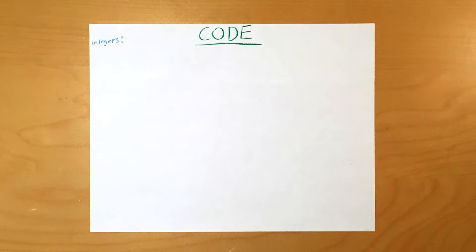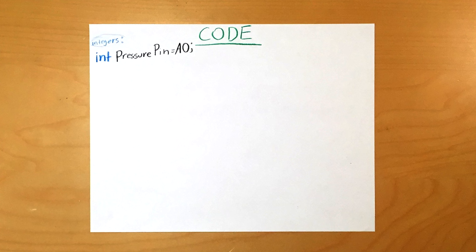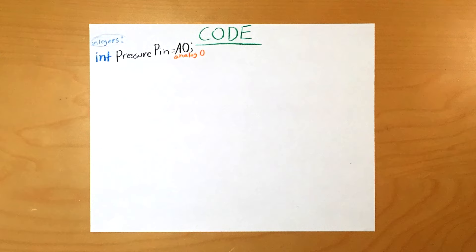Now let's write some code. First, we'll define integers that we'll use later in the program. Set the integer pressure pin to A0. This is the analog input pin that receives voltage. Then create an integer called force, which will measure the analog pin. Finally, make an integer for the LED pin and set it equal to the pin number that you're using.